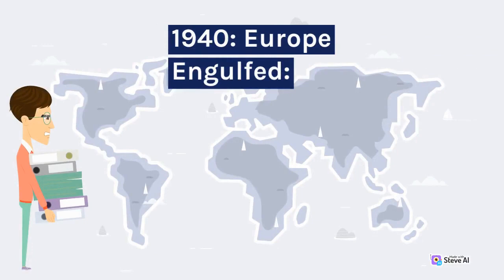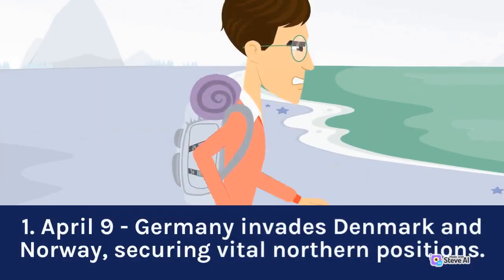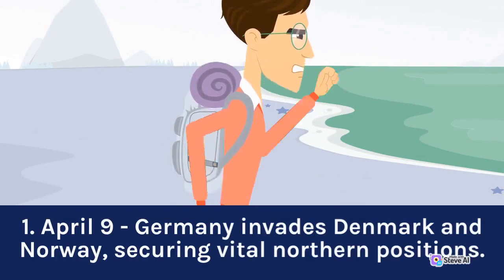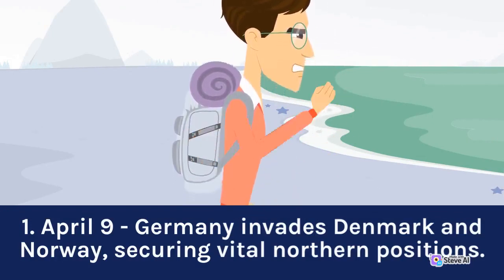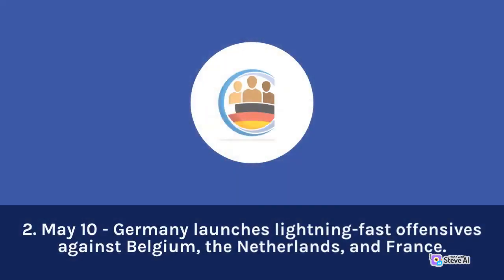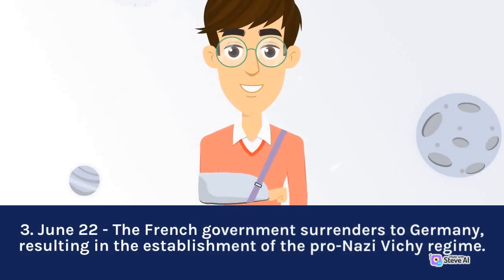1940 — Europe Engulfed: April 9, Germany invades Denmark and Norway, securing vital northern positions. May 10, Germany launches lightning-fast offensives against Belgium, the Netherlands, and France. June 22, the French government surrenders to Germany, resulting in the establishment of the pro-Nazi Vichy regime.